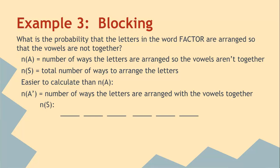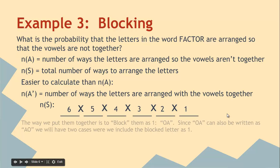n(S) is just the number of ways to arrange the letters. Six for the first, five, four, three, two, one. The way we find out how to arrange them together is we block them. So we block them as one, OA. And so the two vowels are A and O. So we're going to block them as OA. But since OA can be written as AO, we'll have two cases where we can include the blocked letter as one.